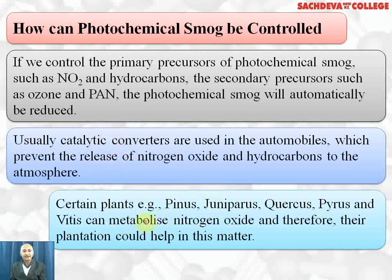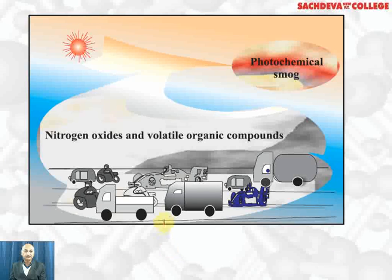Certain plants are very useful — Pinus, Juniperus, Quercus, Pyrus and Vitis can metabolize oxides of nitrogen, and therefore their plantation could help in reducing photochemical smog. A diagram shows how photochemical smog is formed, and it is yellowish in color due to the presence of nitrogen dioxide.